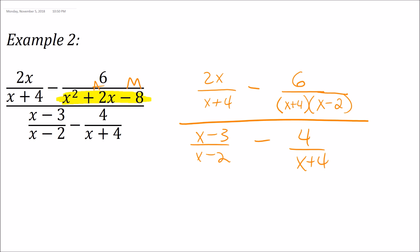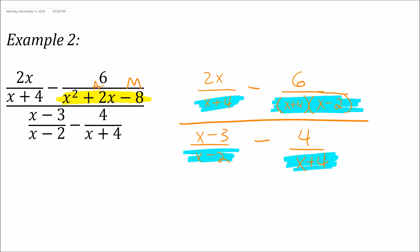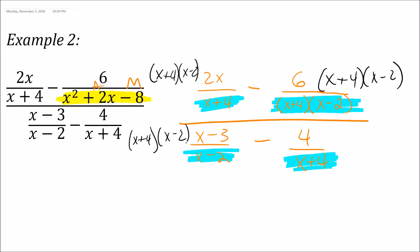Just like we did with the last problem, we want to find the GCF. The greatest common factor of all these denominators is (x plus 4)(x minus 2) — there's an x plus 4, an x plus 4 and x minus 2 together, an x minus 2, and an x plus 4. So the common denominator is (x plus 4)(x minus 2), and we're going to multiply every single term on the top and the bottom by that common denominator.